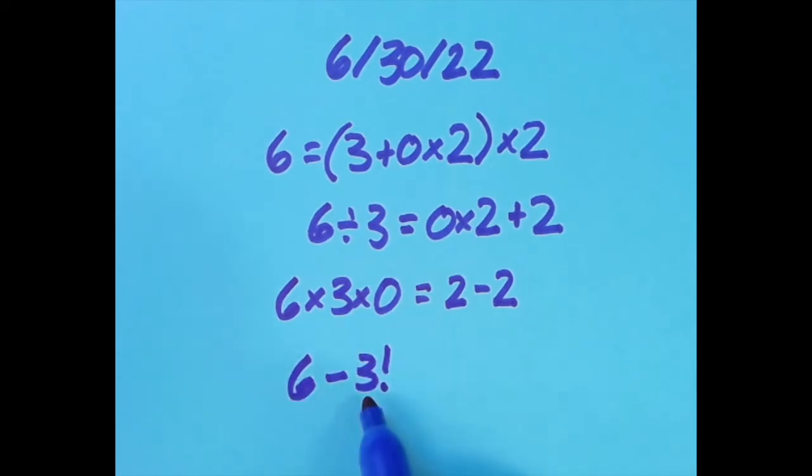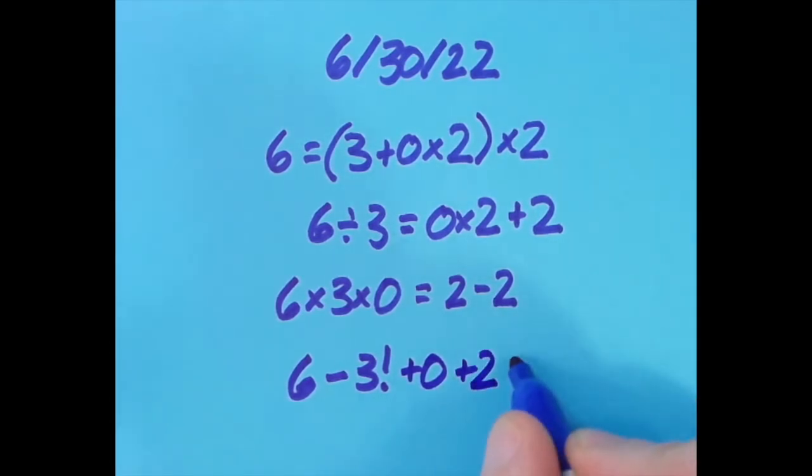But we have that this is just going to be 0 because we have 6-6, that's 0, plus 0, that's still 0, plus 2 gives us 2.